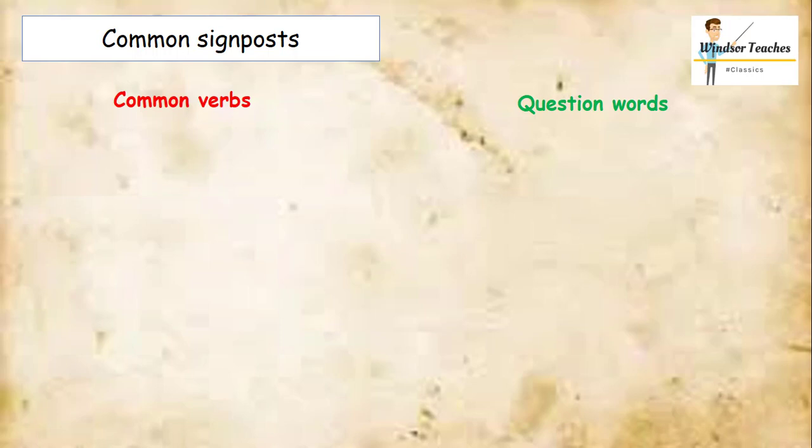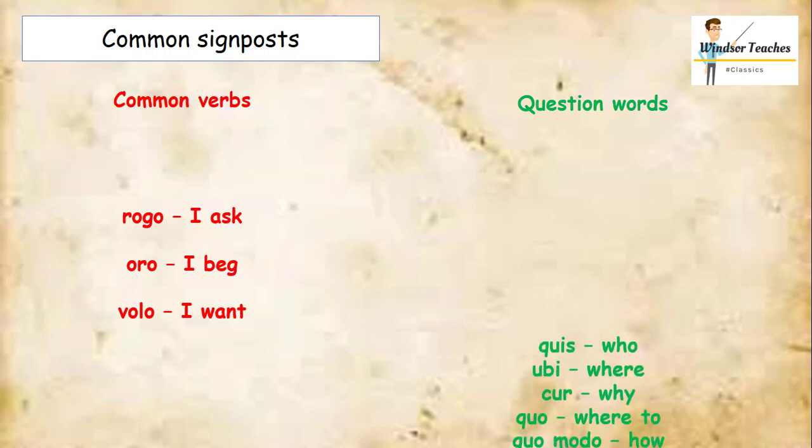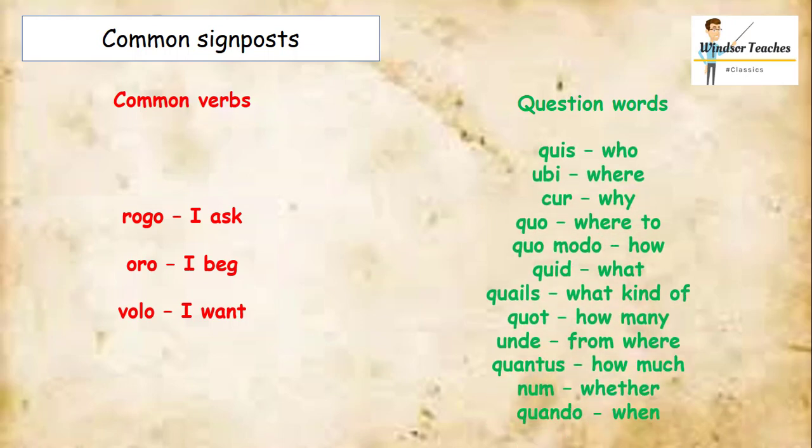What sort of common verbs might we be able to expect? And I've drawn these from the Eduqas Latin GCSE vocab list. So you might get rogo, I ask, or oro, I beg, or volo, I want. So these are quite common in indirect questions, and question words, of course, are quis, meaning who, ubi, where, cur, why, qua, where to, quomodo, how, quid, what, qualis, what kind of, quot, how many, unde, from where, quantus, how much, num, whether, and quando, when. The quando in particular, you're probably thinking is very similar to modern European languages, for example, Italian and Spanish, and you'd be correct.